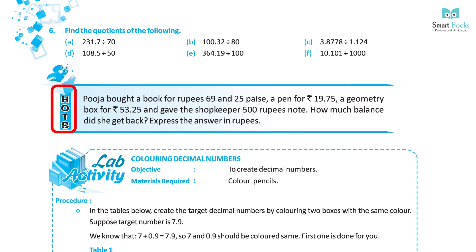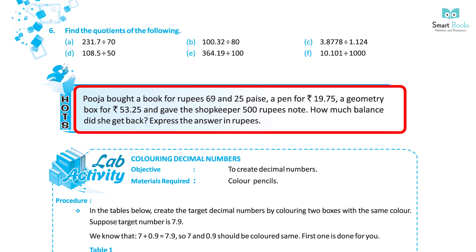HOTS: Pooja bought a book for Rs. 69.25, a pen for Rs. 19.75, and a geometry box for Rs. 53.25, and gave the shopkeeper a Rs. 500 note. How much balance did she get back? Express the answer in rupees.